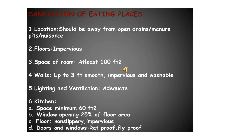The floor should be impervious and higher than the adjoining ground. The room should have a space of 100 square feet and shall provide accommodation for a maximum of 10 persons. Walls should be three feet high, smooth, and corners should be rounded. There should be proper lighting and ventilation facilities. In the kitchen, space should be 60 square feet. Window openings should be 25% of the floor area. The floor should be non-slip and impervious. Doors and windows should be fly-proof and rat-proof.